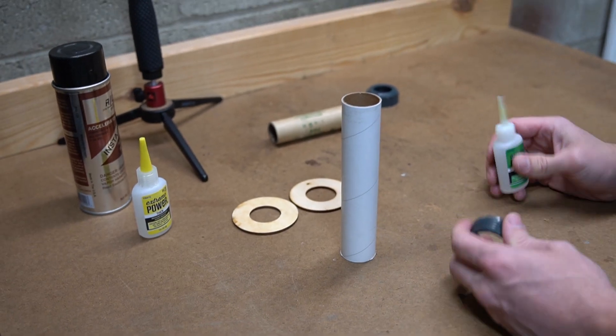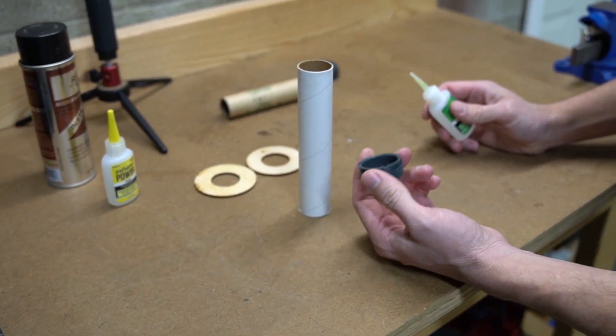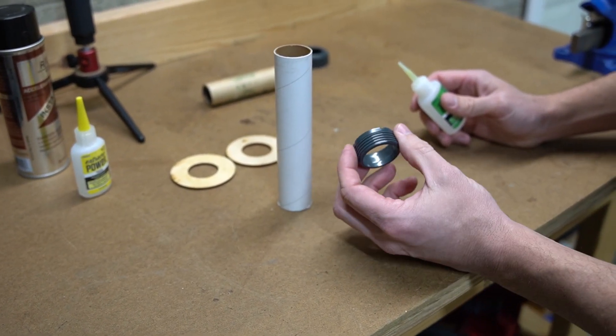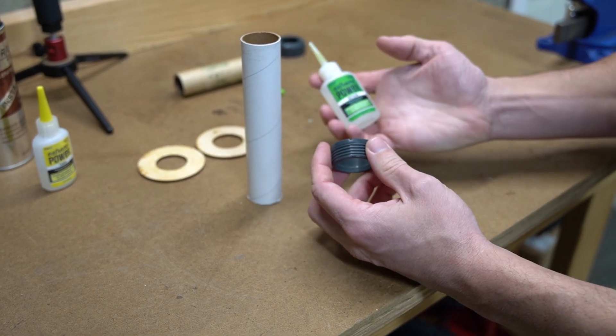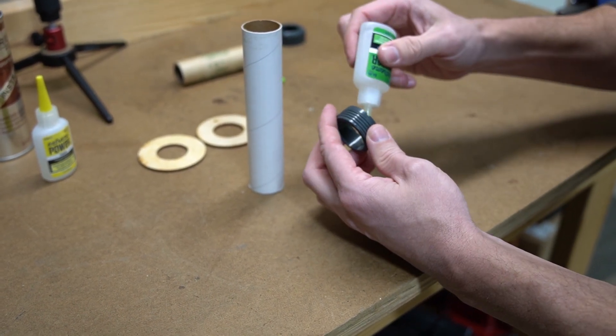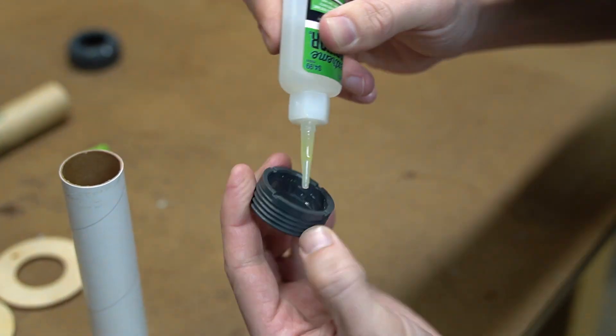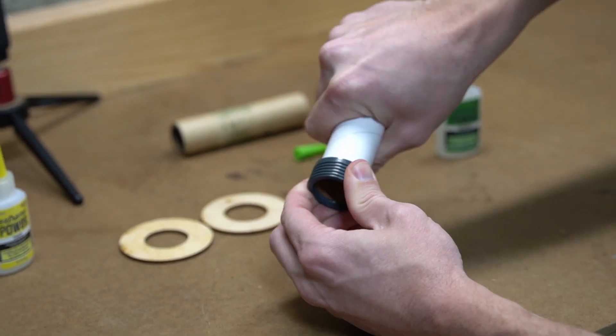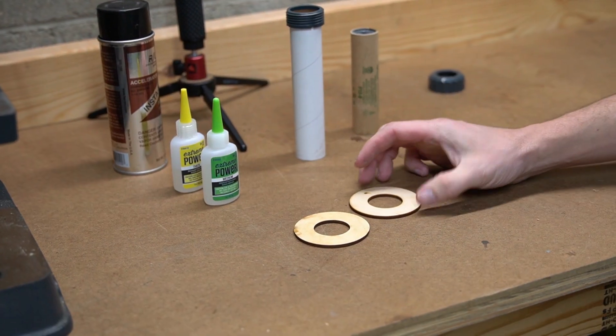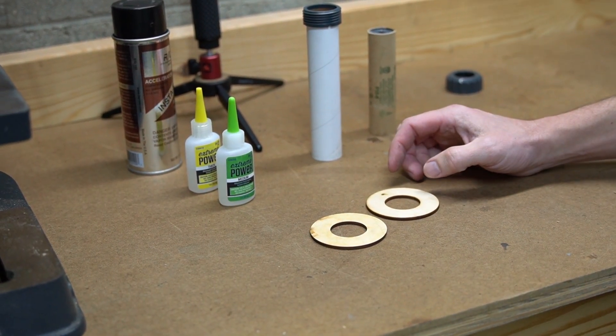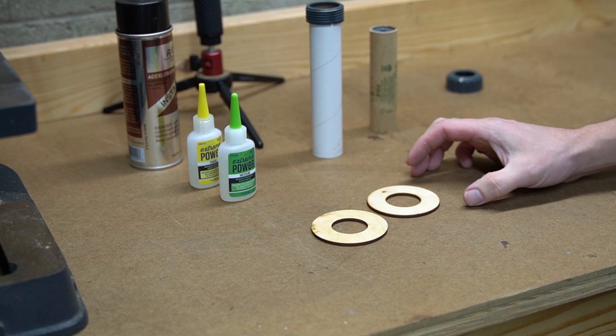We're going to start by assembling the motor mount and start by gluing on the threads for the motor retainer. I'm just going to use medium CA glue. These motor mounts we just got to add a hole for the ignition wire to go through.